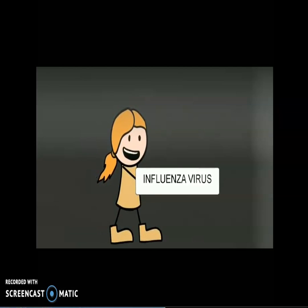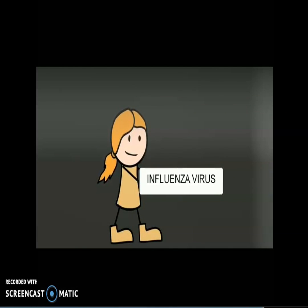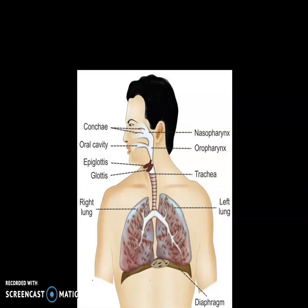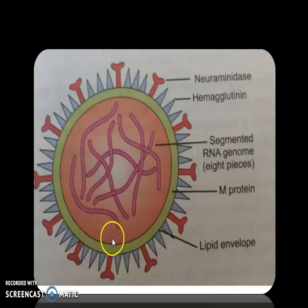Now let's talk about the influenza virus. Flu is an acute infectious disease of the respiratory tract caused by an influenza virus. The genetic material of the influenza virus is single-stranded RNA.